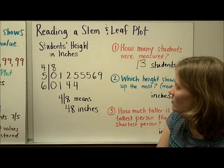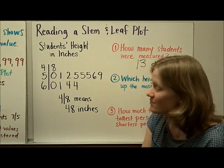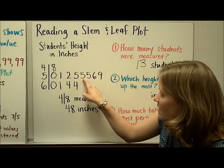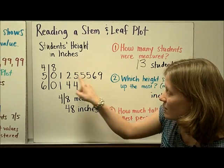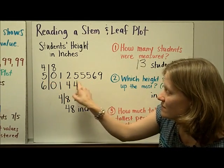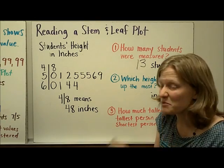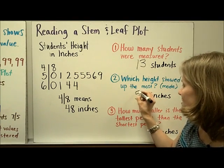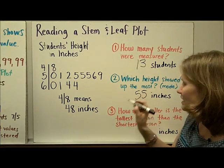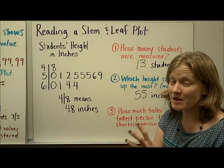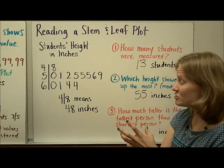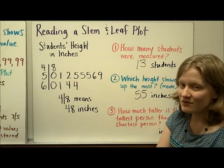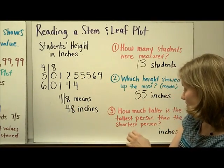Which height showed up the most? I'm going to look for a repeat, and that would be right here — these three fives in a row. That represents 55 inches, and it showed up three times. When we see a number that shows up the most in a data set, that's called the mode. So the mode of this data was 55 inches.